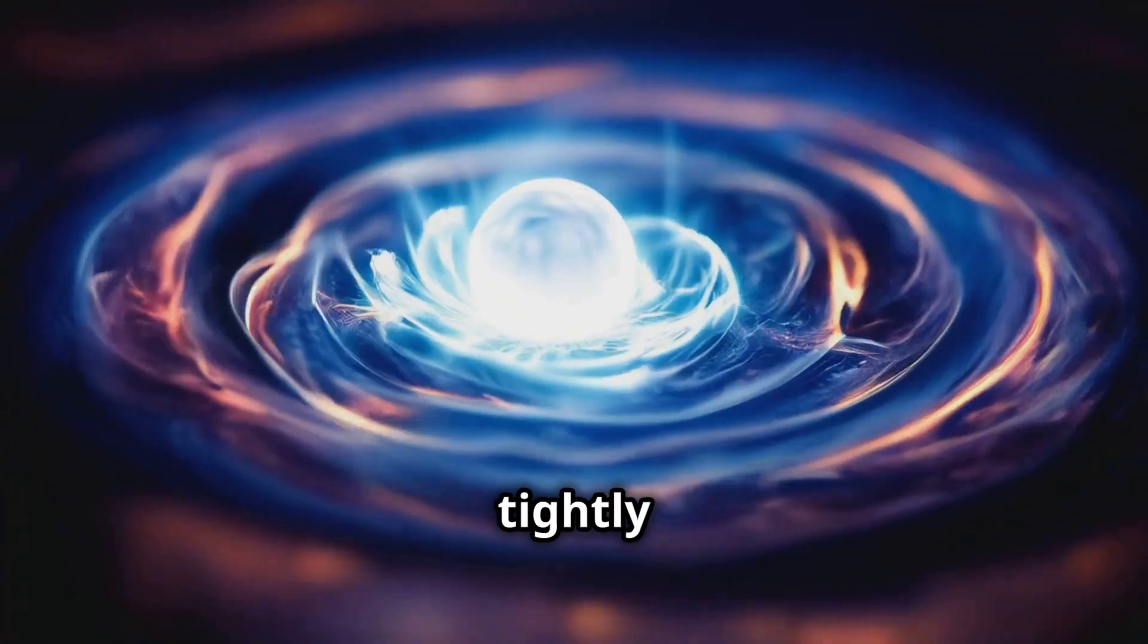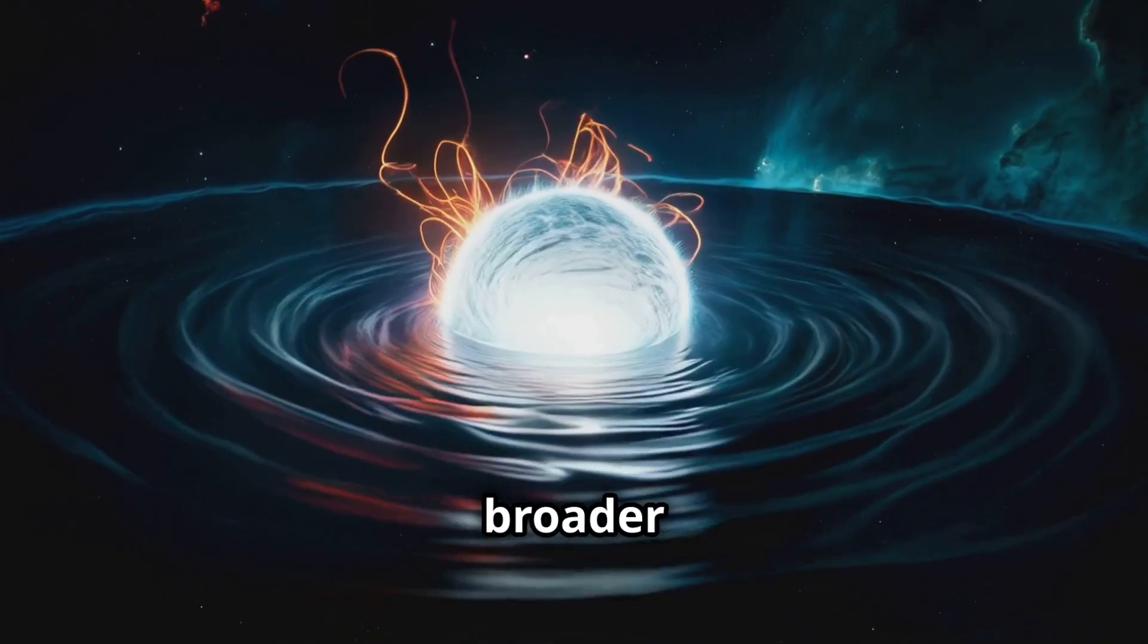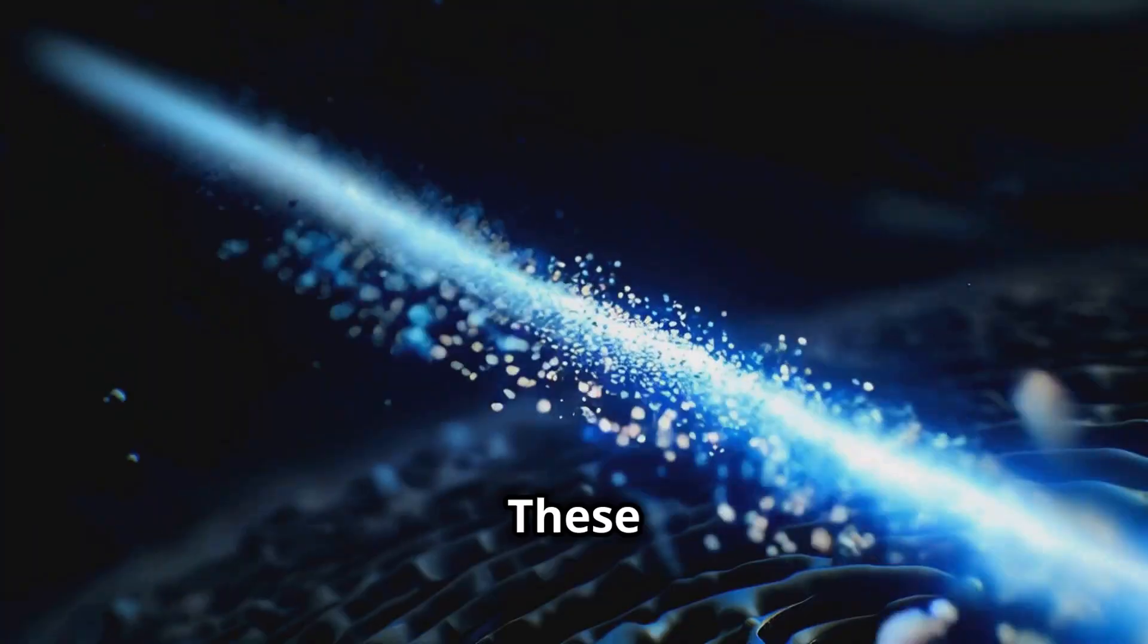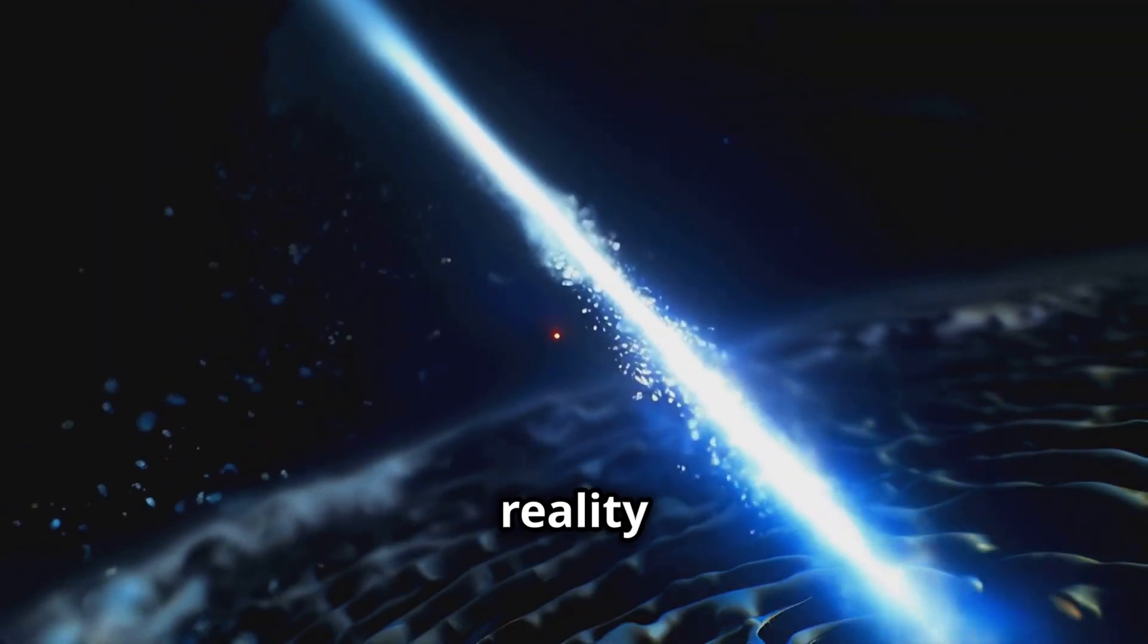Faster spins create intricate, tightly coiled spirals, while slower spins stretch out into broader, simpler patterns. These spiraling motions are the notes of a grand symphony, the rhythm of reality.